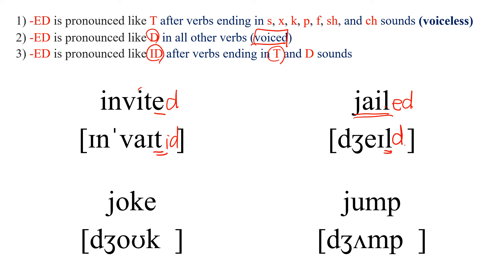Next one: JOKE. This is an E ending, so we add only D to make it past. JOKE has a KE ending, which is one of the voiceless sounds. So we add T and say: JOKED.